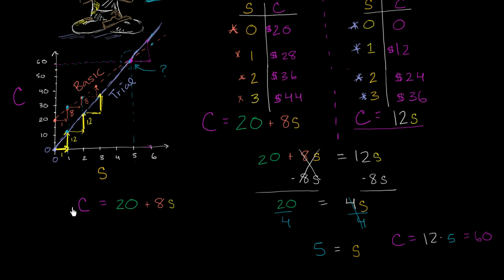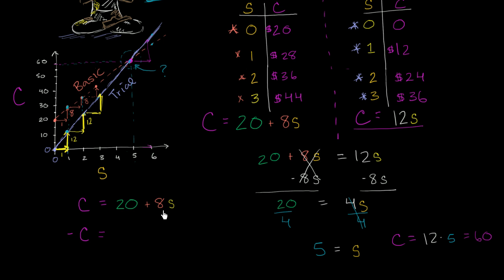He says, what I'm going to do is I'm just going to subtract a c from the left hand side. And then I quickly point out to him — look, you can't just do one thing to one side of an equation, then the equality won't be true anymore. And he's like, no, don't worry. I'm going to do the same thing on the other side of the equation. So I tell him, well, what good would that be, subtracting c from both sides? Because then you're going to end up with a c on the right hand side — you're going to end up with 20 plus 8s minus c. So you're not going to get rid of the c. You're still going to have two unknowns.